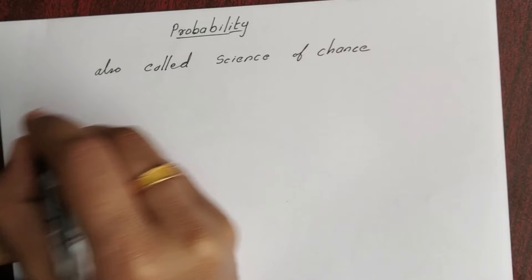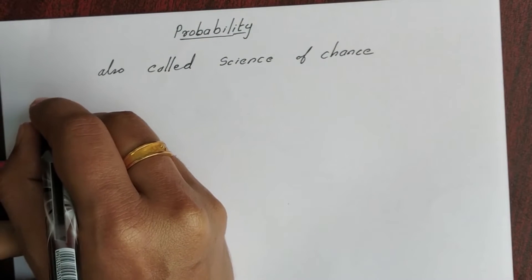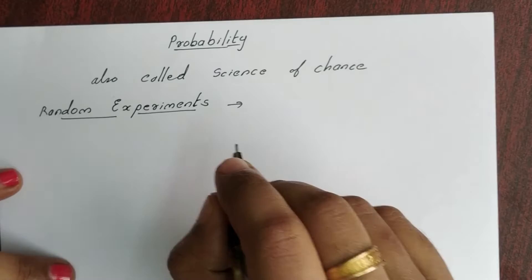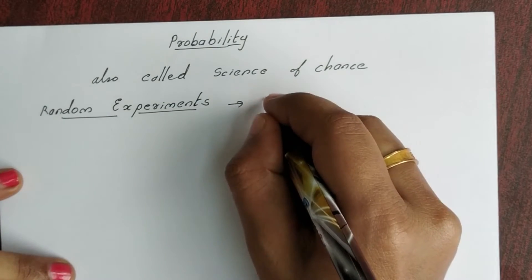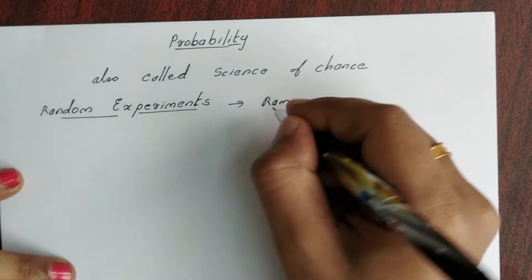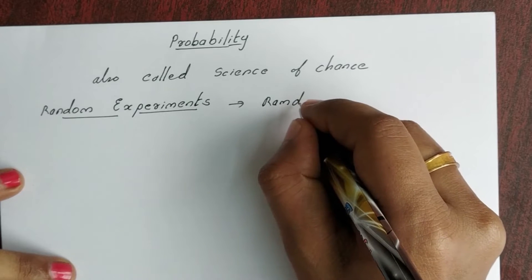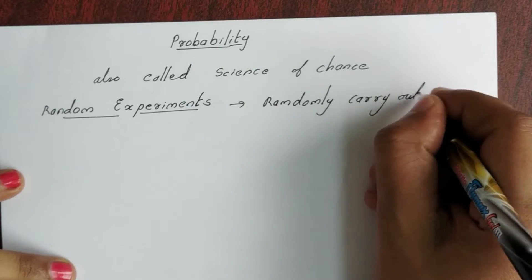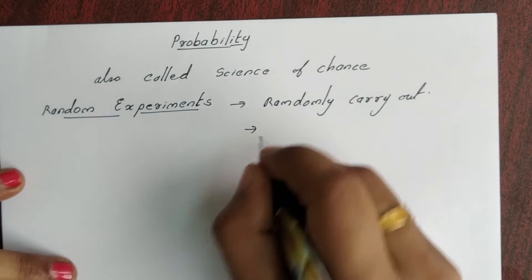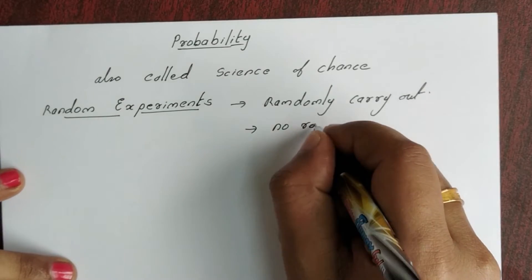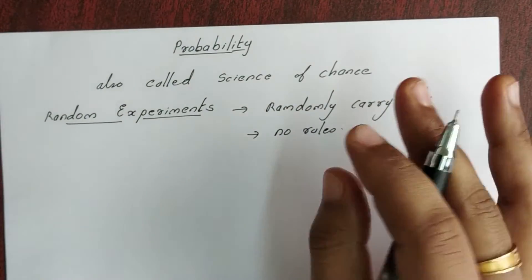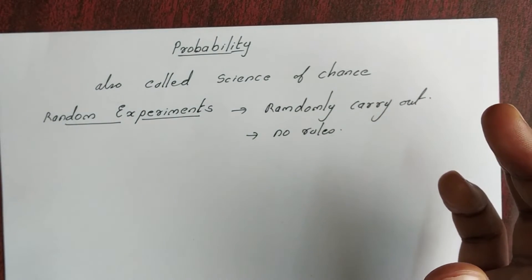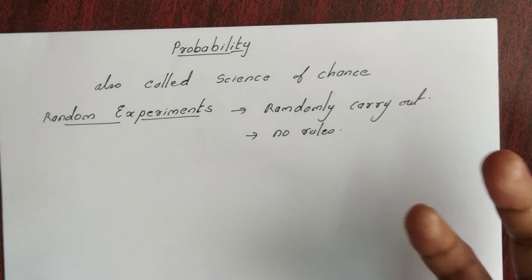How do we know probability? Through random experiments. What is a random experiment? Randomly carried out experiments. For example, coin tossing — we cannot predict whether it will be a head or tail.